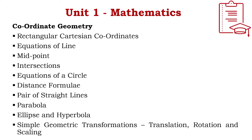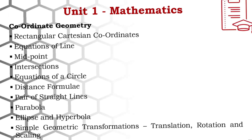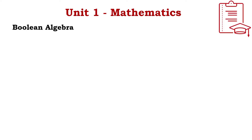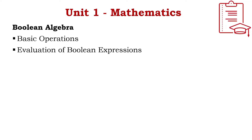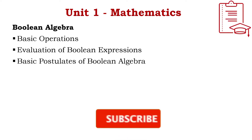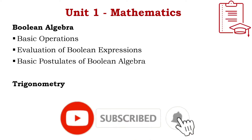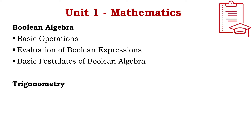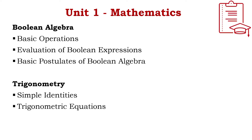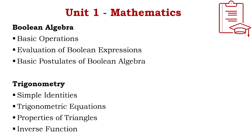The third subunit is Boolean Algebra, covering basic operations, evaluation of Boolean expressions, and basic postulates of Boolean algebra. The fourth subunit is Trigonometry, covering simple identities, trigonometric equations, properties of triangles, and inverse functions.